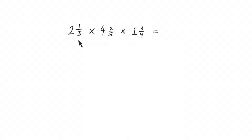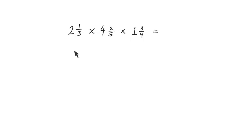Here we have three mixed numbers being multiplied: 2 and 1 third times 4 and 2 fifths times 1 and 3 quarters. Again, we do the same thing — we need to convert each of these mixed numbers into an improper fraction. The first one: the numerator will be 2 times 3 plus 1. 2 times 3 is 6, plus 1 is 7, so that will become 7 over 3.